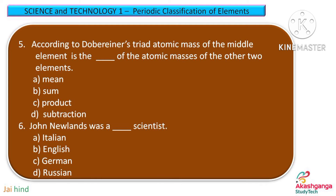Question 6. John Newlands was a … scientist. Option A: Italian, Option B: English, Option C: German, and Option D: Russian.